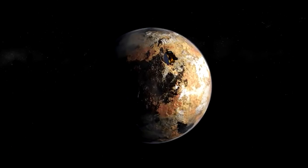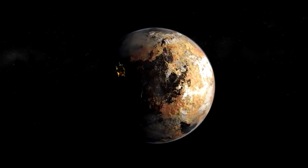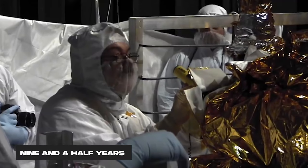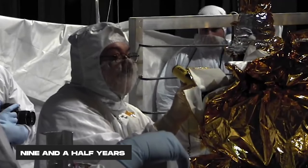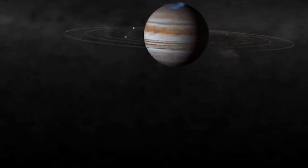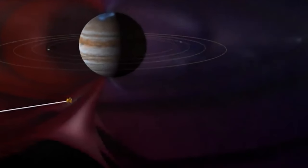The journey of the New Horizons spacecraft to its destination was an arduous one, spanning a lengthy nine and a half years. Along its path, it transmitted detailed images of Jupiter back to Earth.